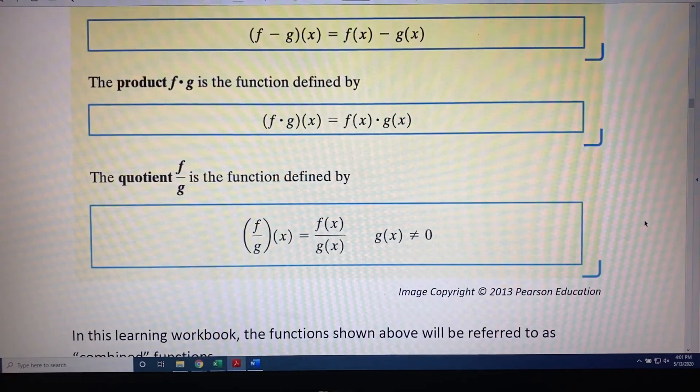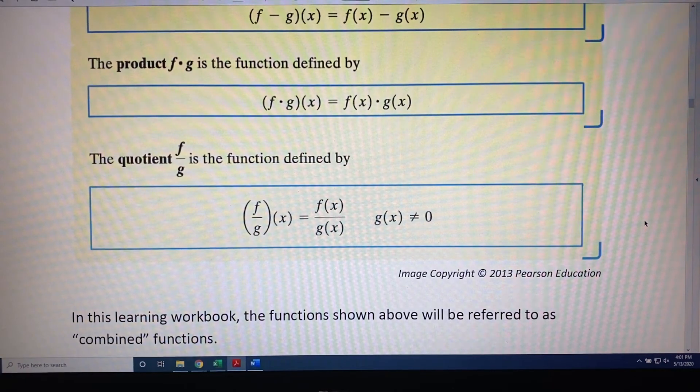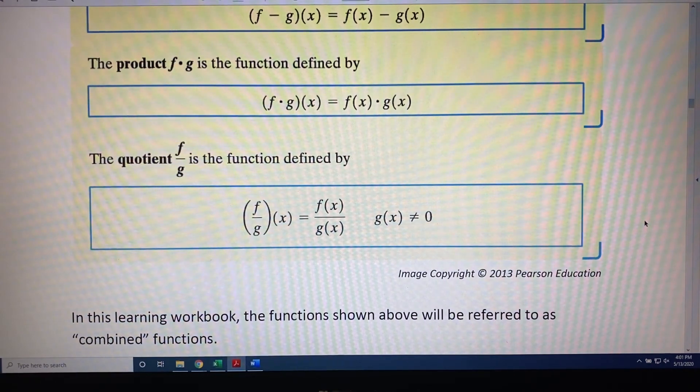The quotient f over g is the function defined by f over g in parentheses of x equals f of x divided by g of x, as long as g of x is not equal to zero. In this learning workbook, the functions shown above will be referred to as combined functions.